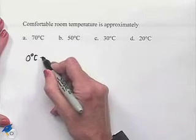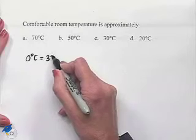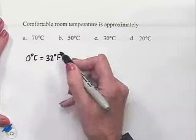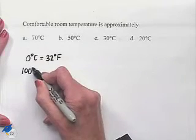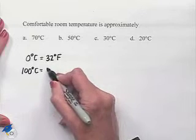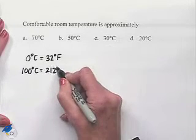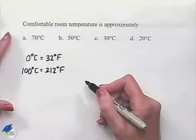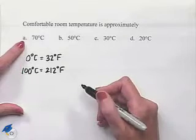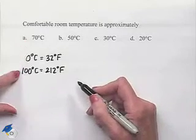Celsius is going to be the freezing point of water, so that's equivalent to 32 degrees Fahrenheit. 100 degrees Celsius is the boiling point of water, and that's equal to 212 degrees Fahrenheit. So just knowing that, we can probably eliminate 70 from our choices. It's way too close to boiling.